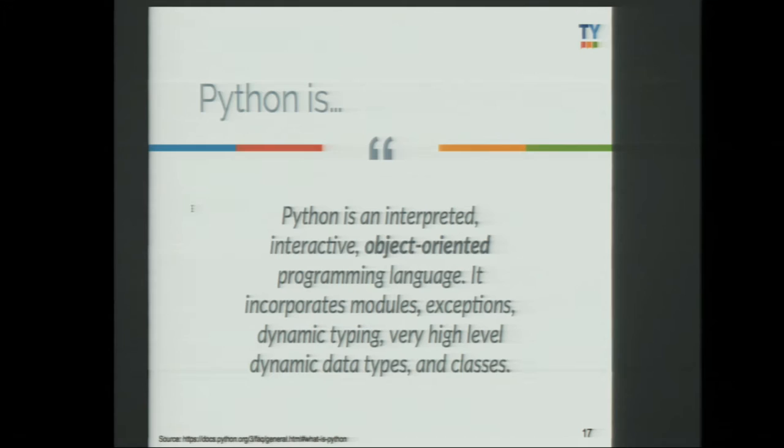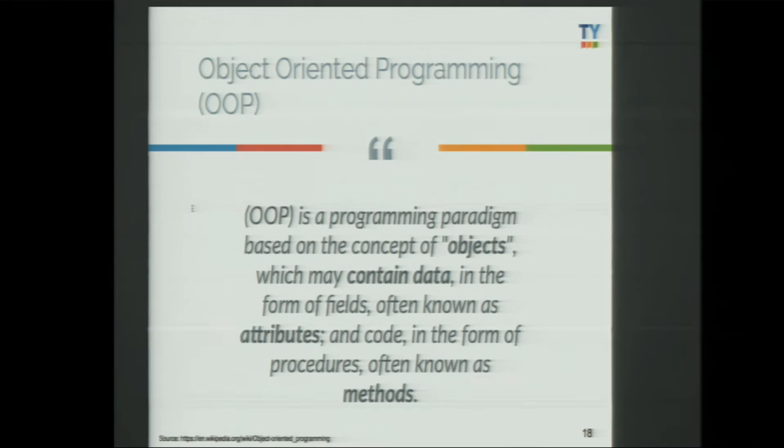So the question is: how do I transform my code into software? Let's go back to the basics. What is Python? According to the Python documentation, Python is an object-oriented programming language. So as a data scientist, you should know what an object is and how to use objects. This is the first tip I'm going to give you: as a Python data scientist or data engineer, learn how to use objects.